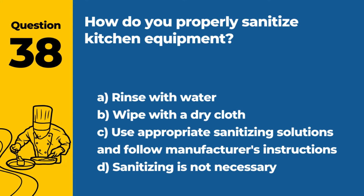Question 38. How do you properly sanitize kitchen equipment? a. Rinse with water. b. Wipe with a dry cloth. c. Use appropriate sanitizing solutions and follow manufacturer's instructions. d. Sanitizing is not necessary. Answer c. Use appropriate sanitizing solutions and follow manufacturer's instructions. Proper sanitization of kitchen equipment involves using appropriate sanitizing solutions and following the manufacturer's instructions to ensure effective reduction of harmful bacteria.